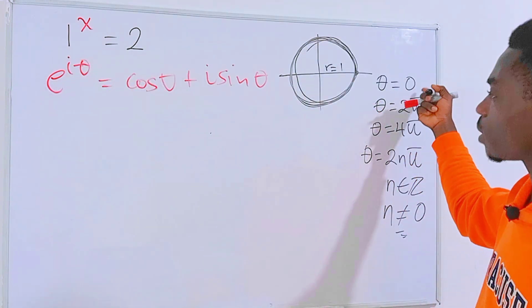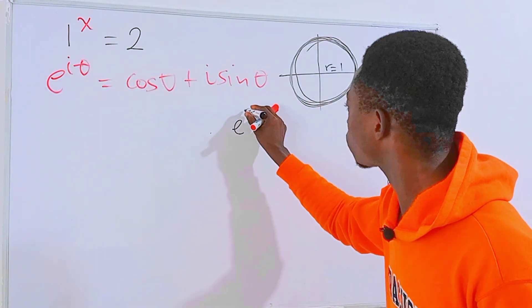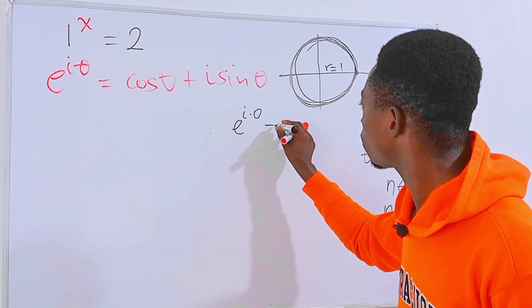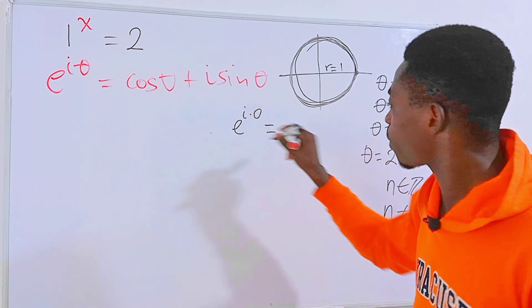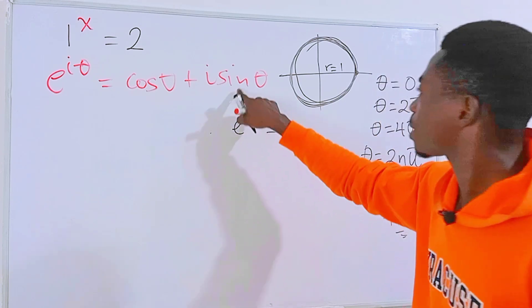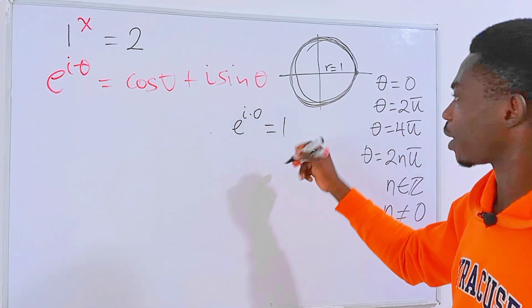So when theta equals 0, we have e to the power i times 0, which equals cos of 0, which is simply 1. Sine 0 is 0. So we have this equation here.